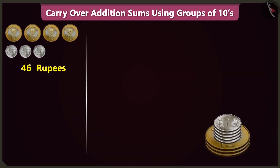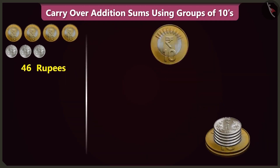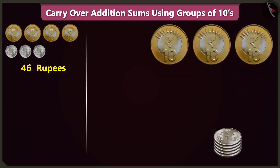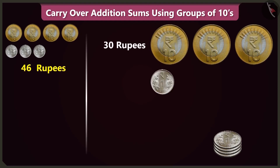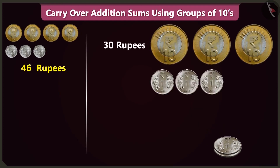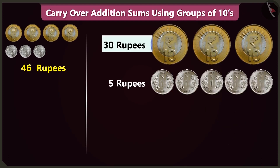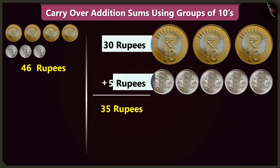In this pile of coins, there are 3 coins of 10 rupees — which is 30 rupees. And 5 coins of 1 rupee. So there are 30 and 5 — 35 rupees.